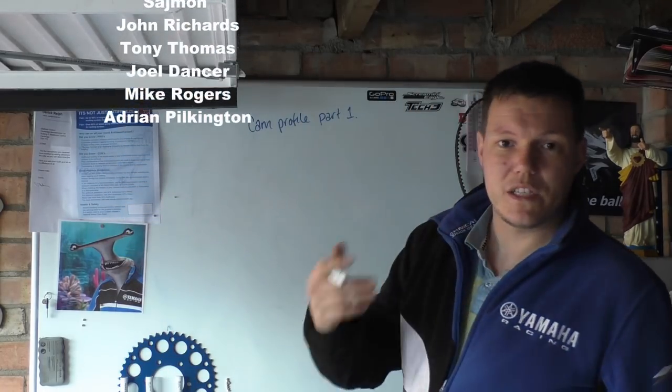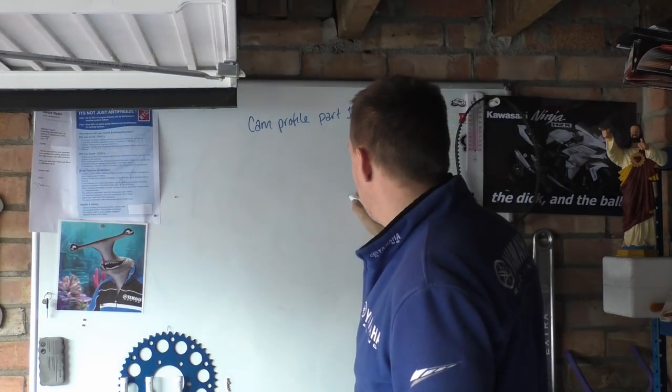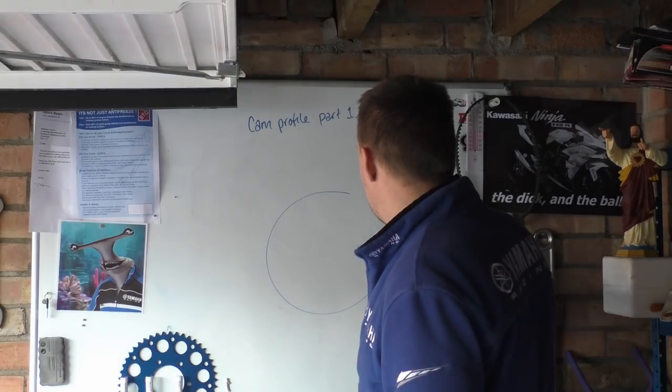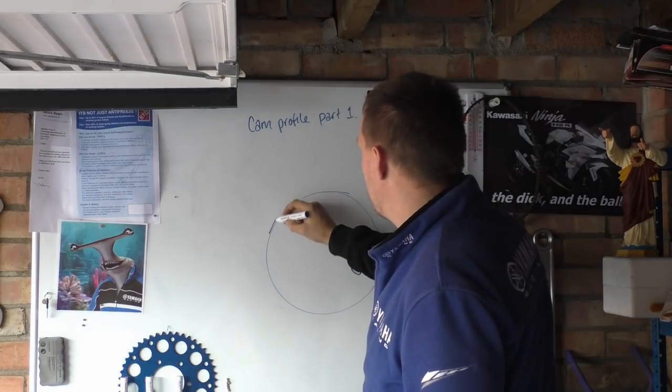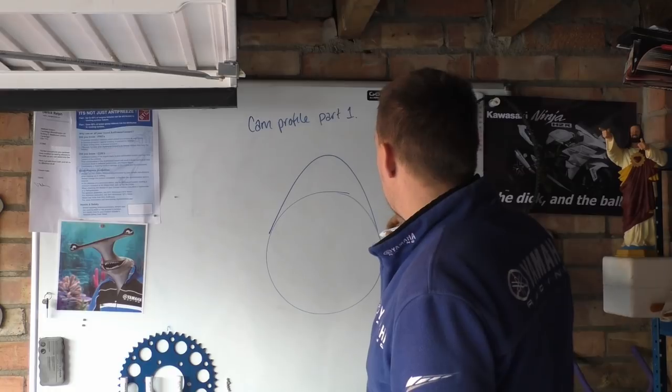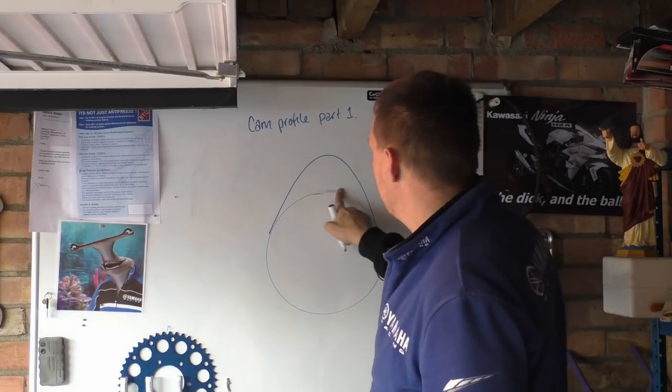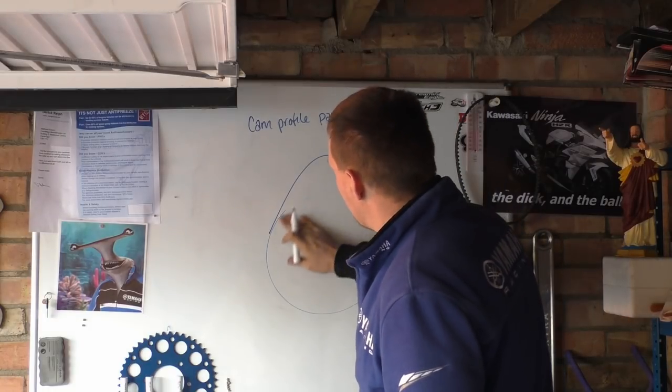We actually have to look at the cam itself. A cam is, for all intents and purposes, a circle with a nose on it. We can get rid of that because we need to draw other circles on it.